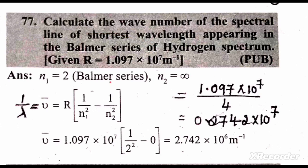For Balmer series, N1 value is equal to 2, and as they have mentioned shortest wavelength, N2 value is equal to infinity. We have a formula to calculate wave number.